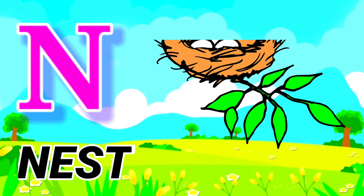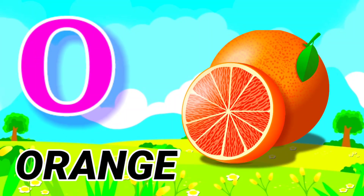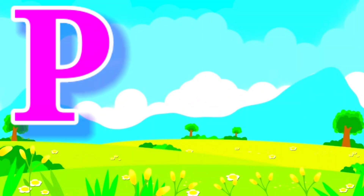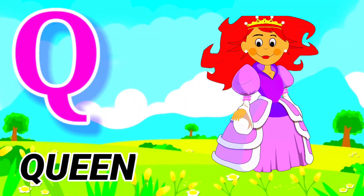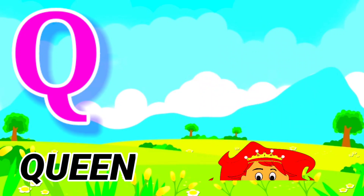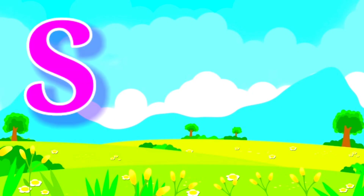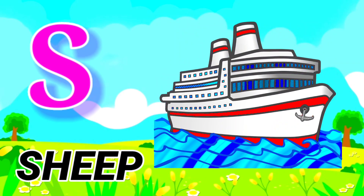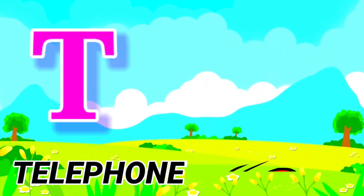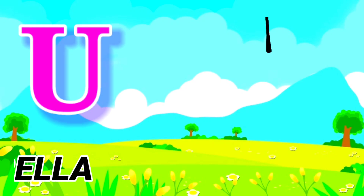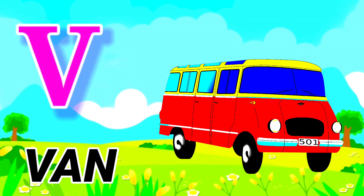N for nest, O for orange, P for parrot, Q for cute. R for road, S for sheep, T for telephone, U for umbrella, V for bird.